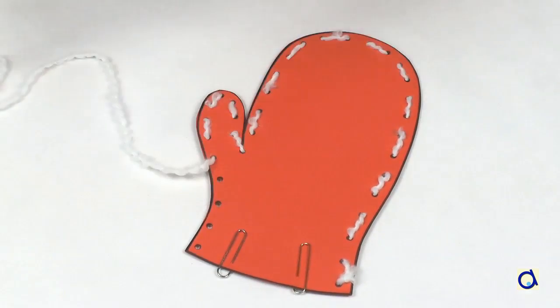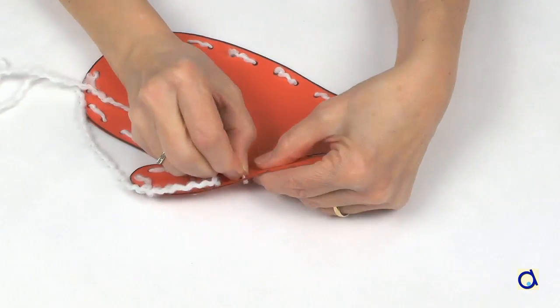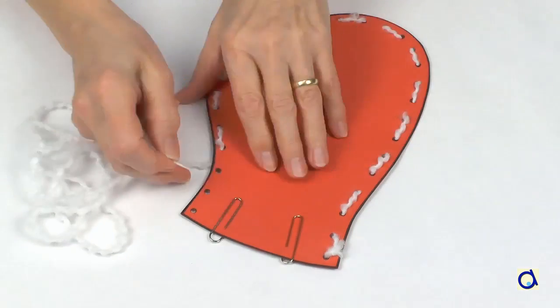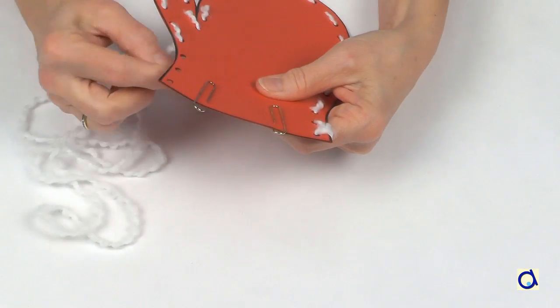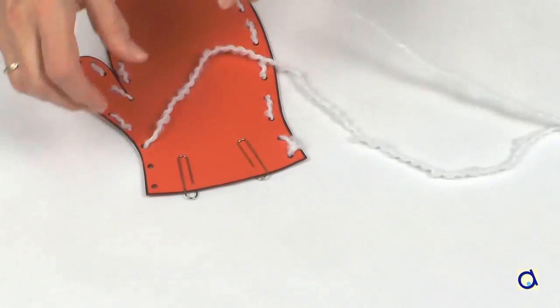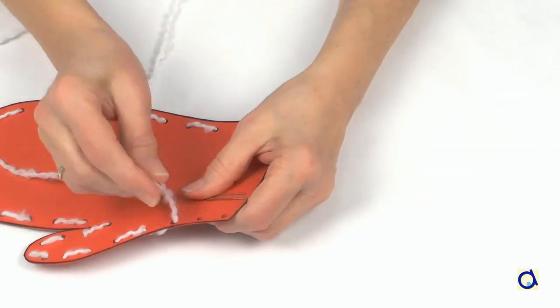A first possibility is to thread the yarn up and down all along the edge of the mitten. This is a simple pattern that gives a nice result. When you have finished threading the yarn, tie a knot in the last hole.